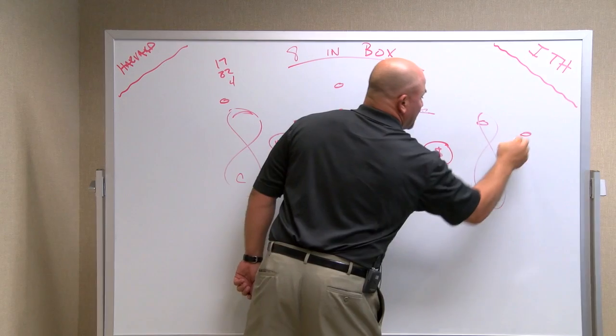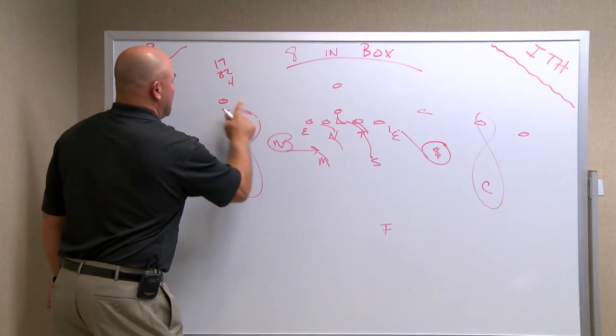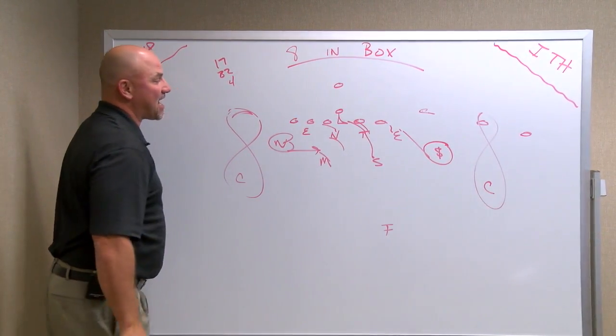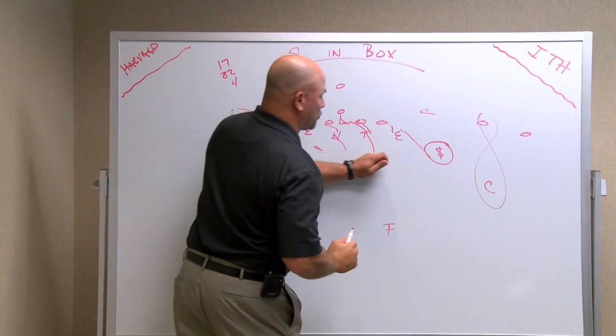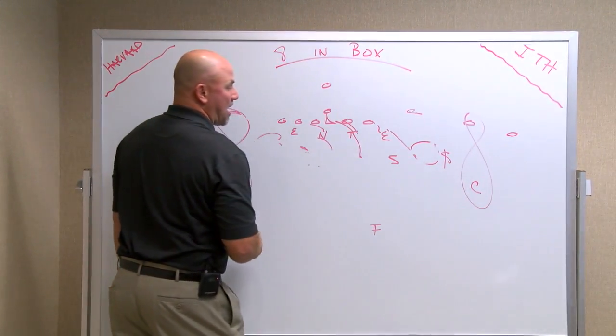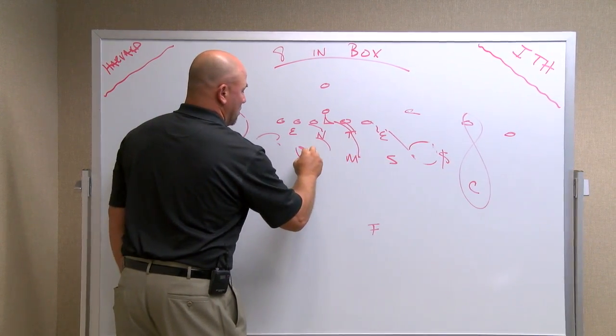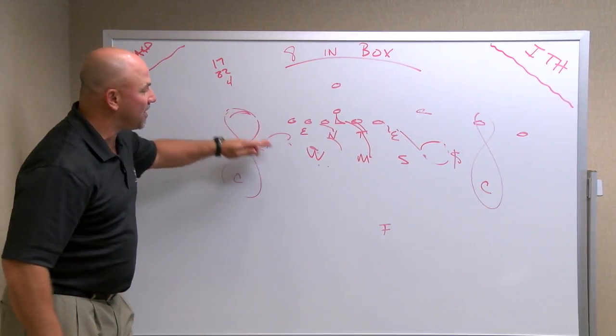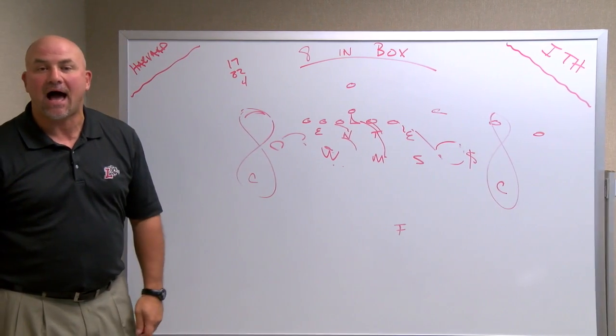If Lafayette goes to a trips formation, whether they leave the tight end on the backside or not, you will see them just push over. Strong safety here. Maybe kick the Sam linebacker out. Mike, Will, and the backside corner. Again, 8 in the box.